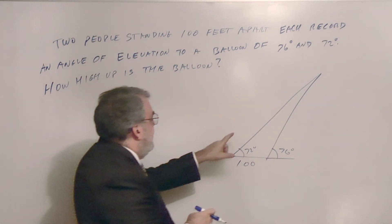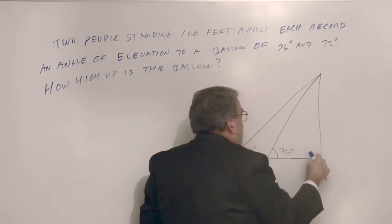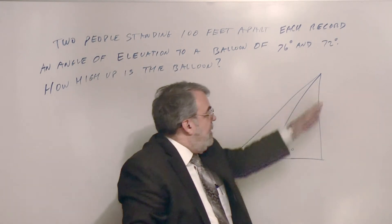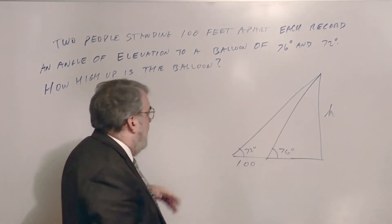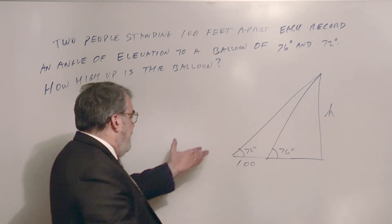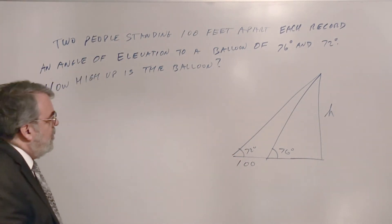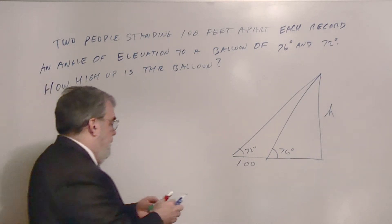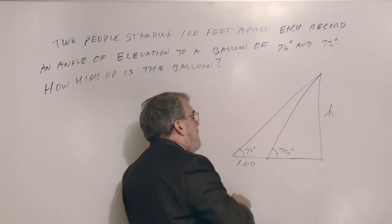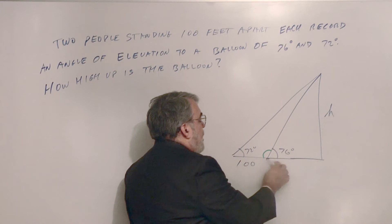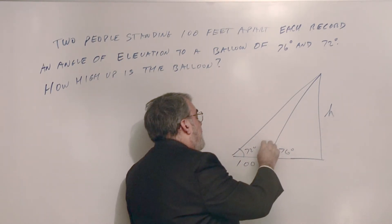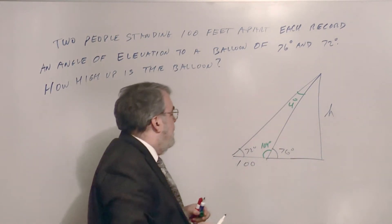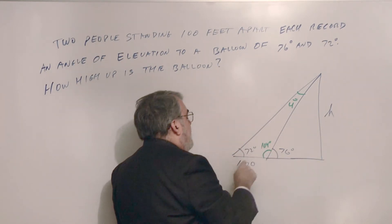If I have either side, I can use the right triangle to get the balloon height H. I can only work with the obtuse triangle. This angle is 180 minus 76 equals 104 degrees. That makes the remaining angle 4 degrees. Let me verify: 4 plus 104 plus 72 equals 180. Yes, that's correct.